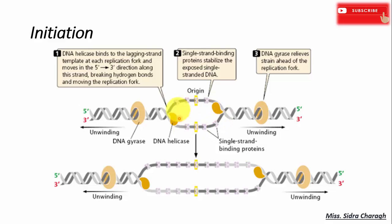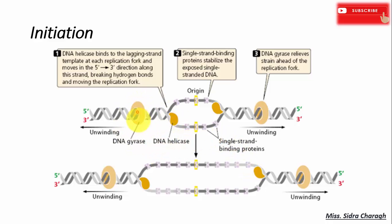As the parental DNA is unwound by DNA helicase and single-stranded binding proteins, the resulting supercoiling occurs in the DNA. Another enzyme called DNA gyrase then comes in — it induces a transient single-strand break and removes the supercoiling.